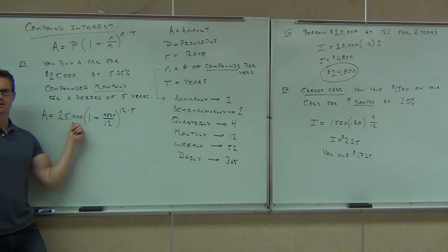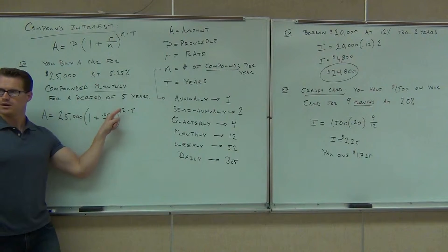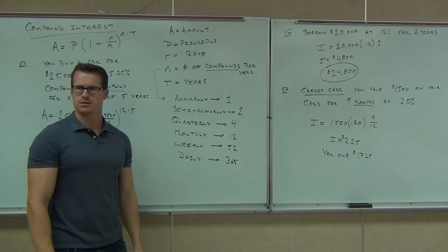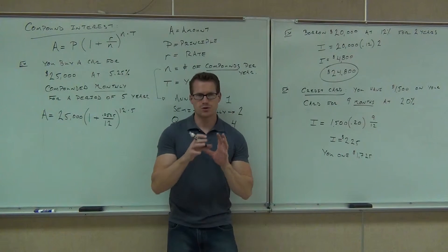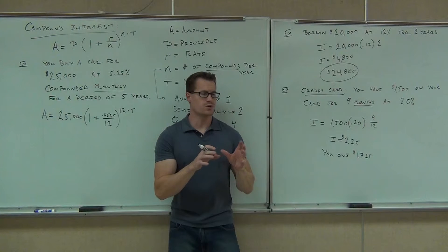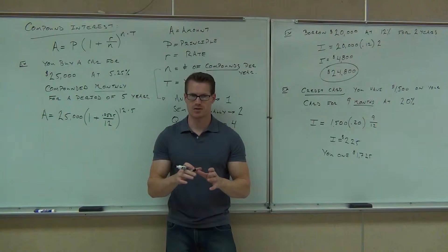Are you okay that $25,000 goes there? 0.0525? How about the 12? And then times 5. You all clear on where that's coming from? Here's how you calculate this. If you don't do it this way, you're probably going to have to round. So I'm going to show you exactly how to do this on your calculator. So take your calculators out.